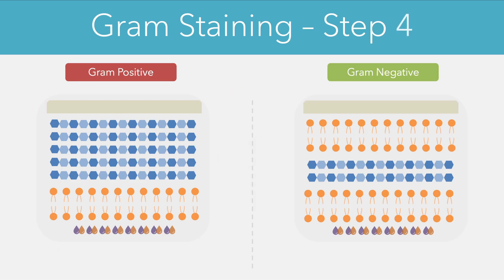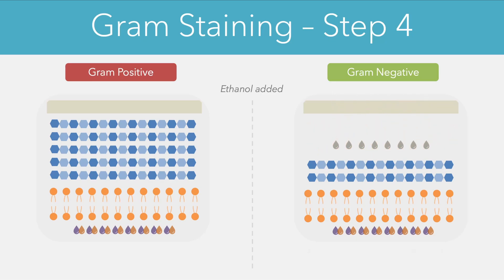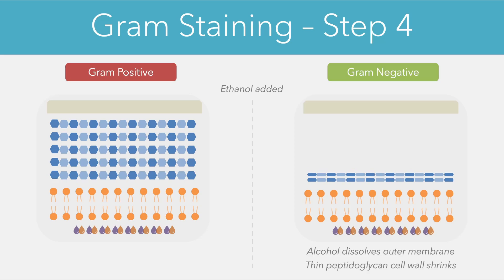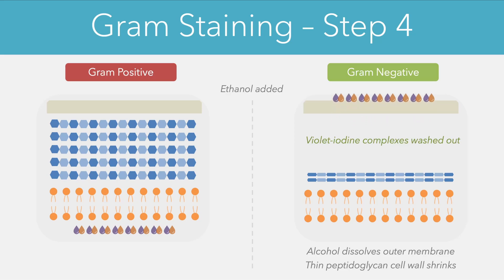Following this we add our next reagent, which is ethanol or acetone, and this is perhaps the most important step in differentiation. Looking at the gram negative cells first — when we add the ethanol it ends up dissolving away the outer membrane and causing the peptidoglycan cell wall to become quite shriveled and shrunk. As a result of these changes, the crystal violet iodine complexes diffuse across the cell membrane and the thin peptidoglycan cell wall, essentially getting washed out and eventually leaving the cell entirely.